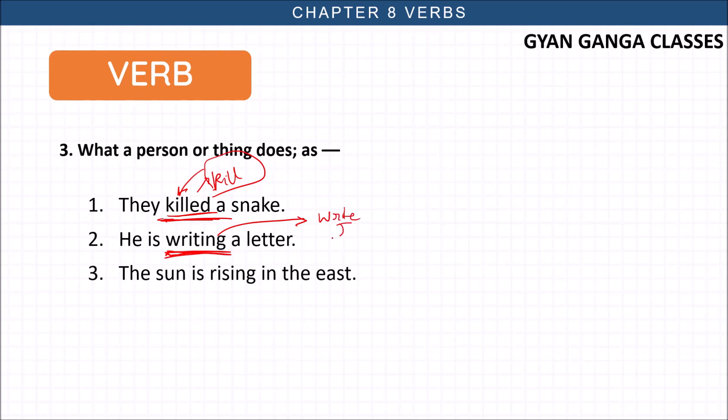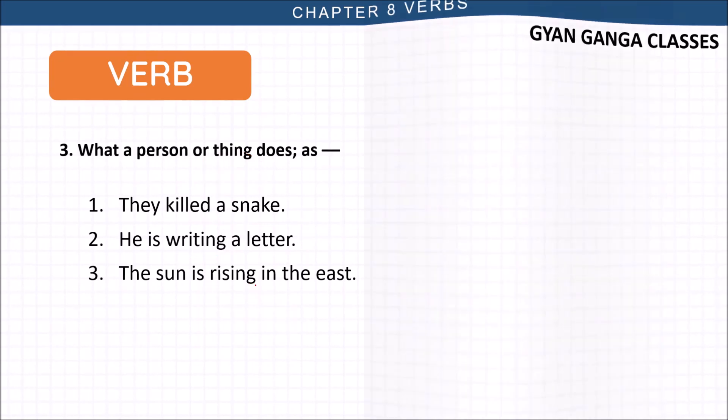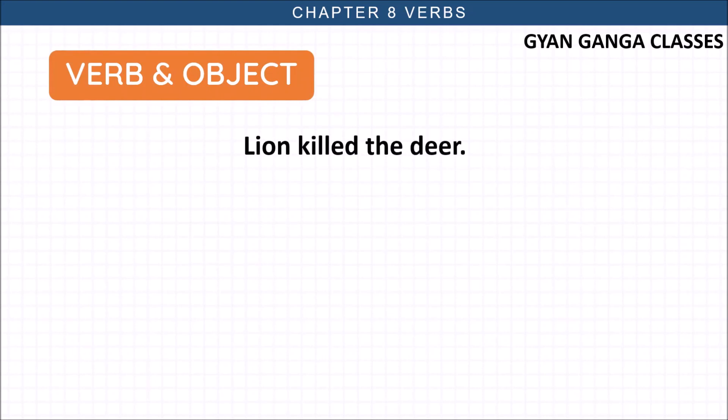Whenever there is a sentence, there is a verb and a related object and subject. Subject is what that sentence is talking about, the main lead. Suppose here the line we have is: Lion killed the deer. We are talking about lion. Lion did something - killed. This is the action word.